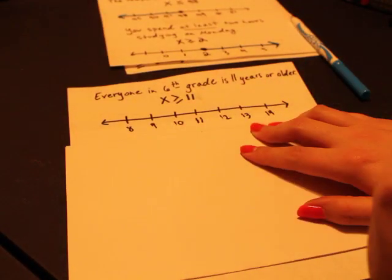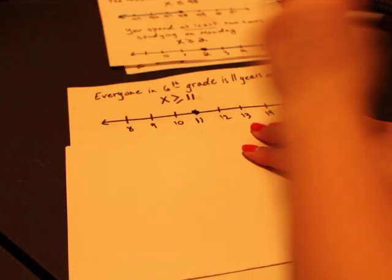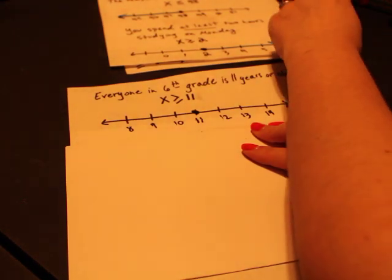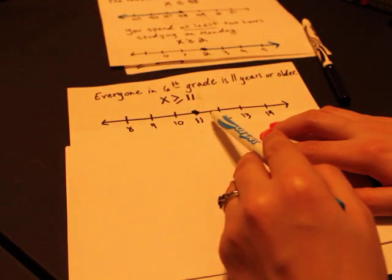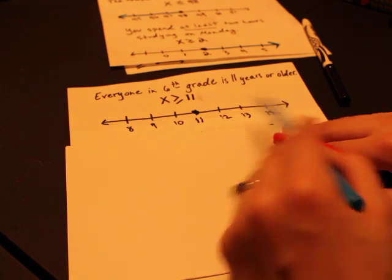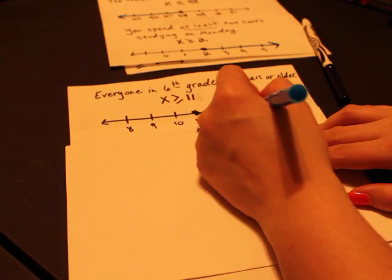And it's a greater than or equal to, so we're going to put a closed circle. And greater than—again, we want all the numbers that are greater than or equal to 11, so that's to the right. Shade in to the right.